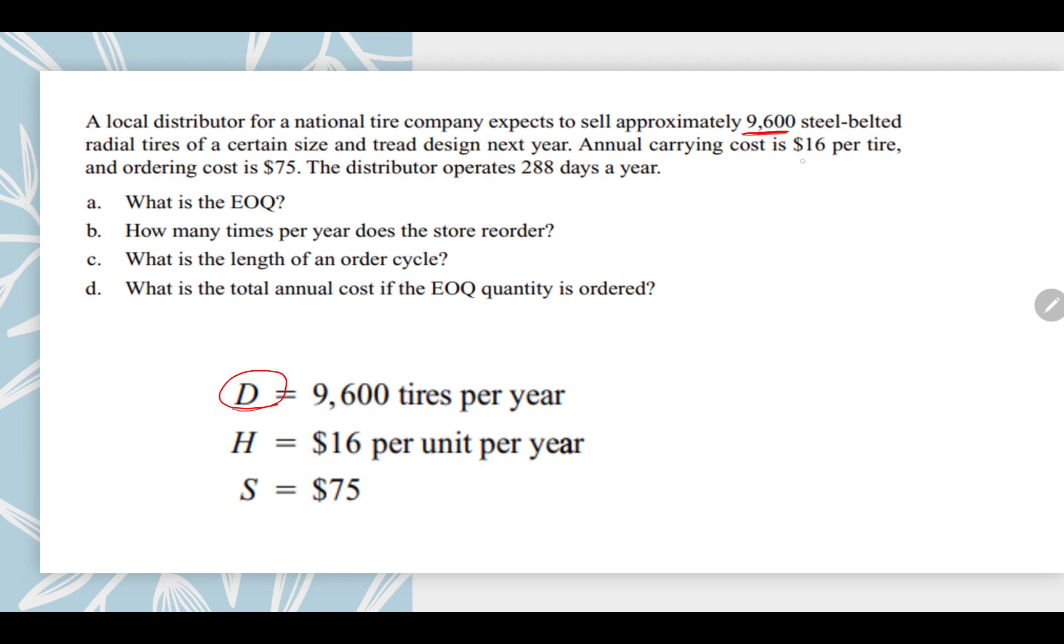Annual carrying cost is $16. That is H, the carrying cost. My students generally ask me that they are finding it difficult to identify the values of the variables. So holding cost is $16 per tire.